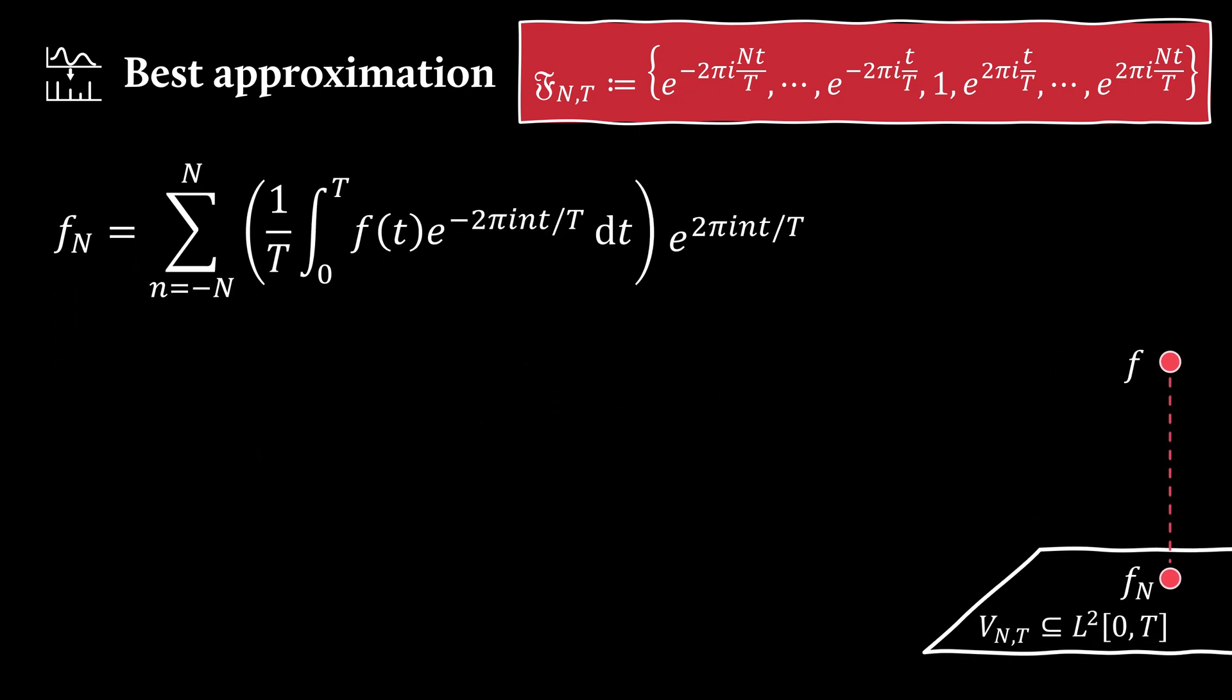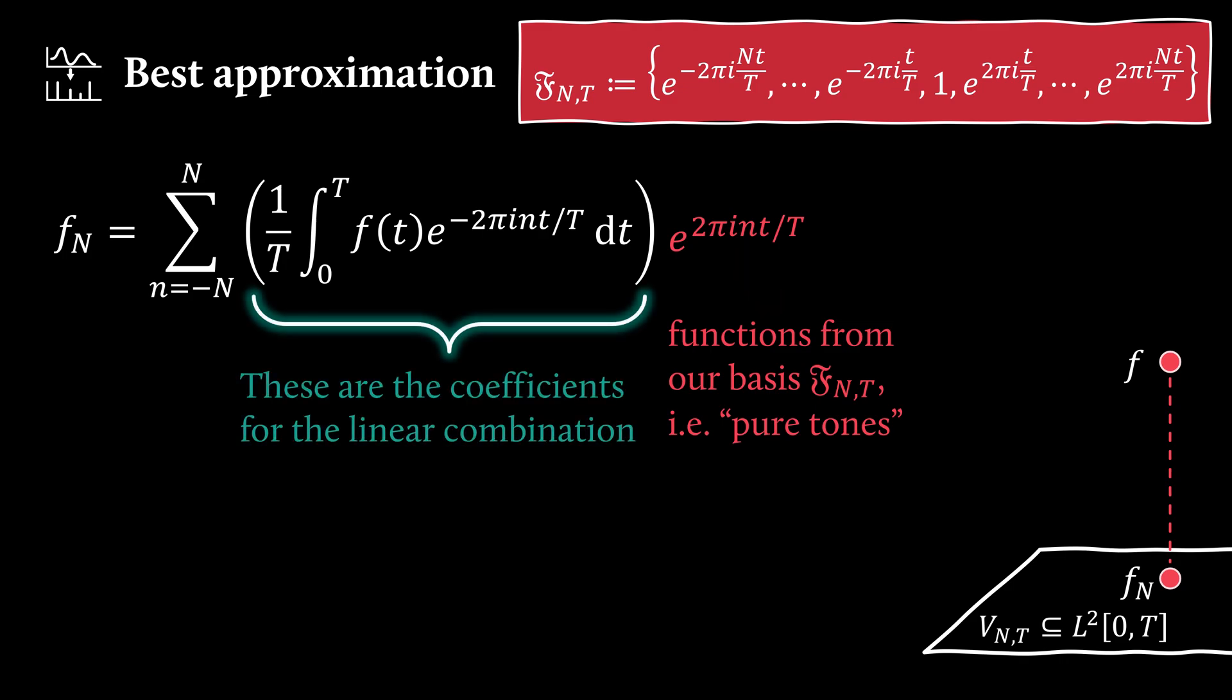Okay, so we have this expression. What does it tell us? Well, the really cool thing is that this is just a linear combination of our basis functions from our basis fₙₜ, that is the pure tones. And what's written in front of it is just the coefficients for the linear combination. Let's call them Zₙ.